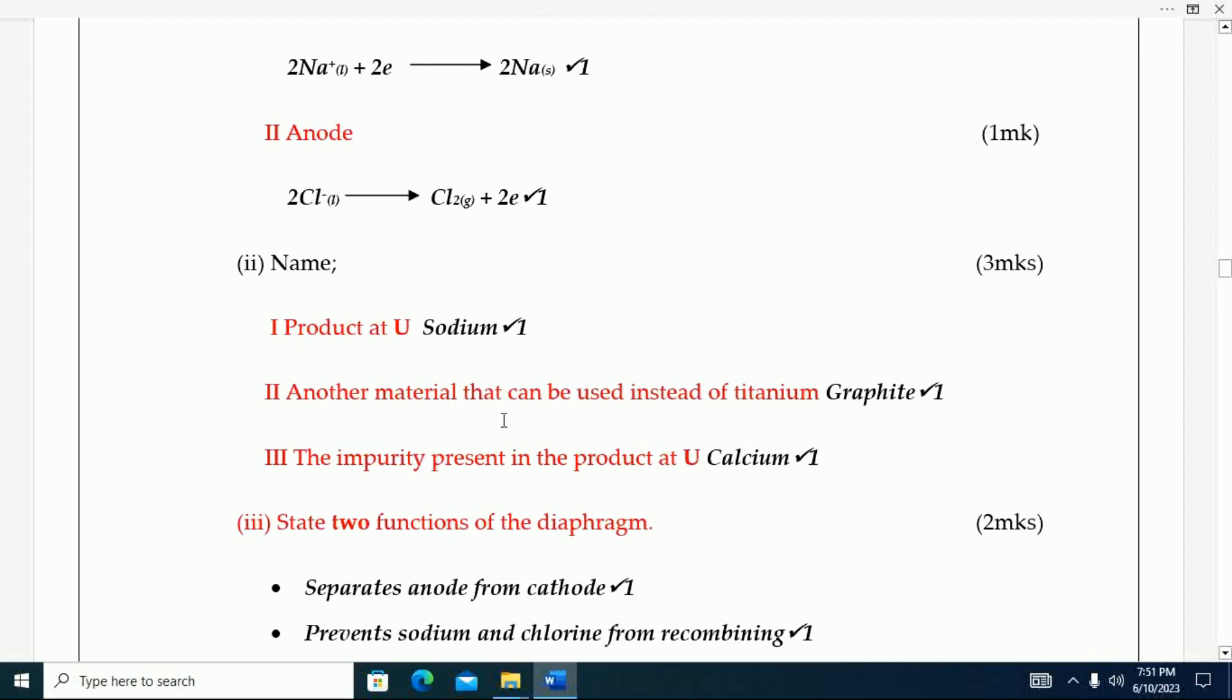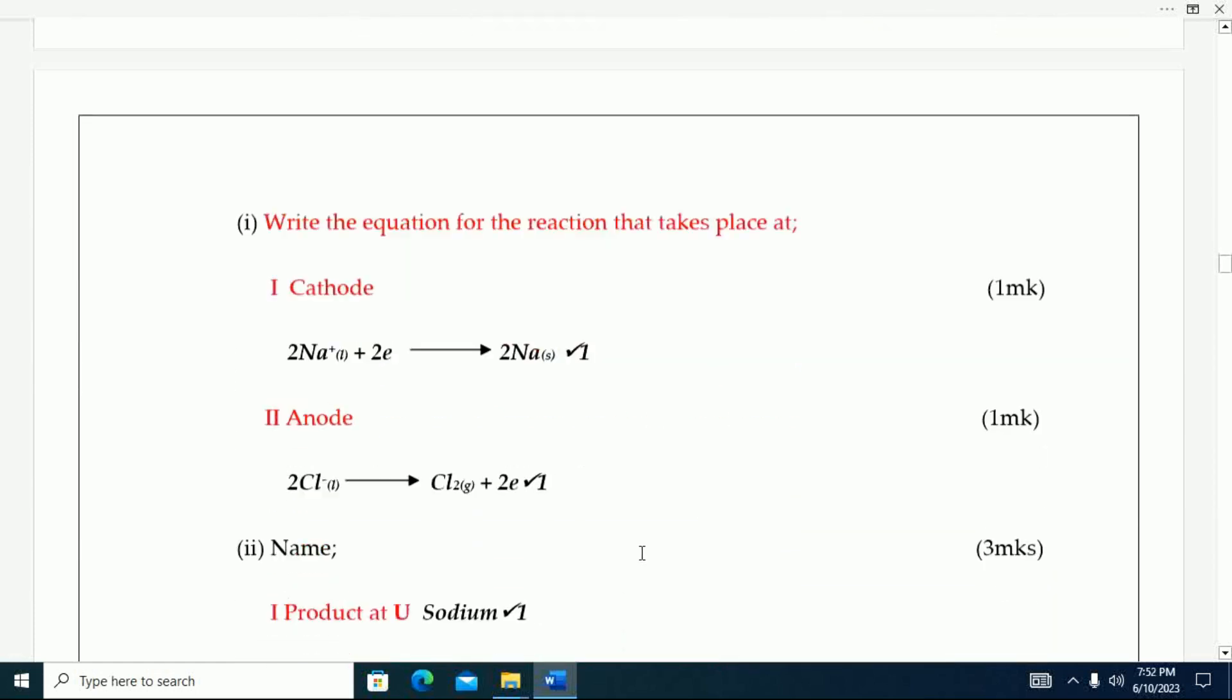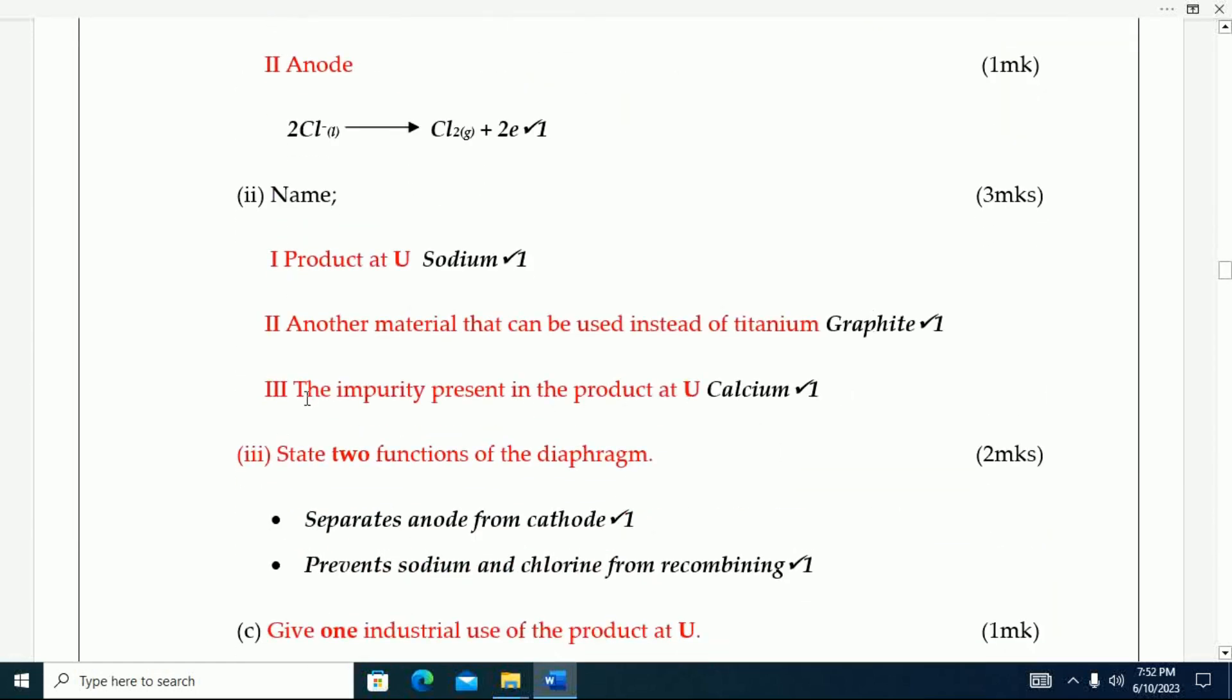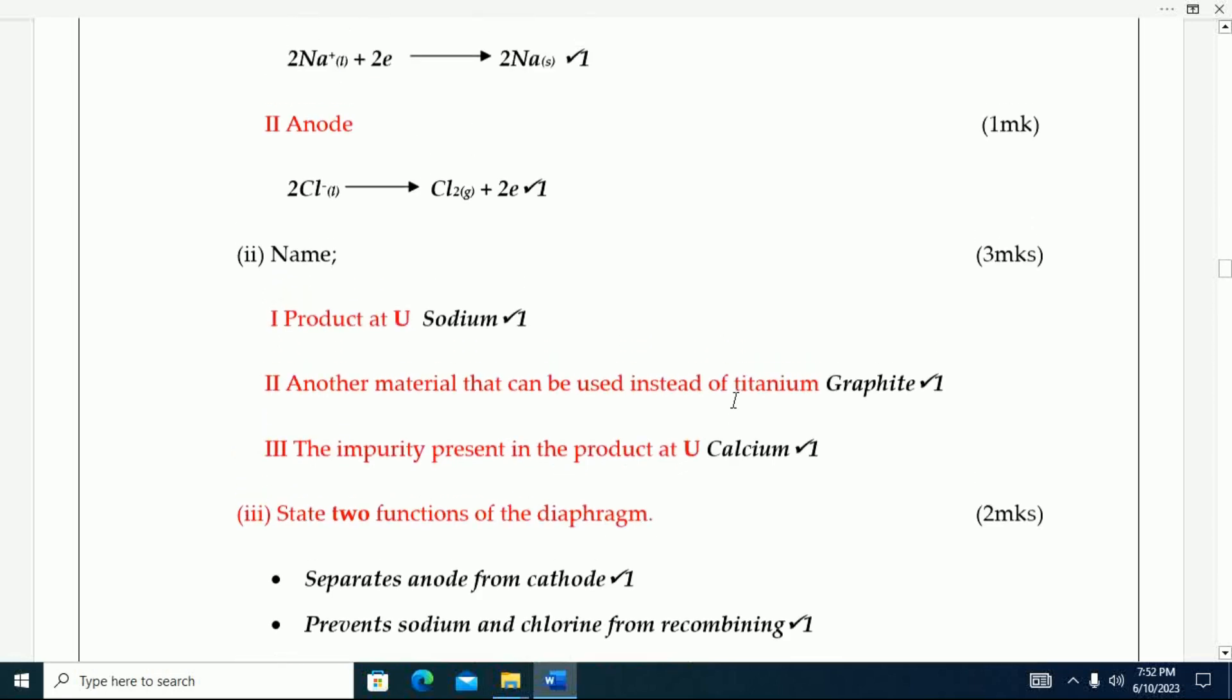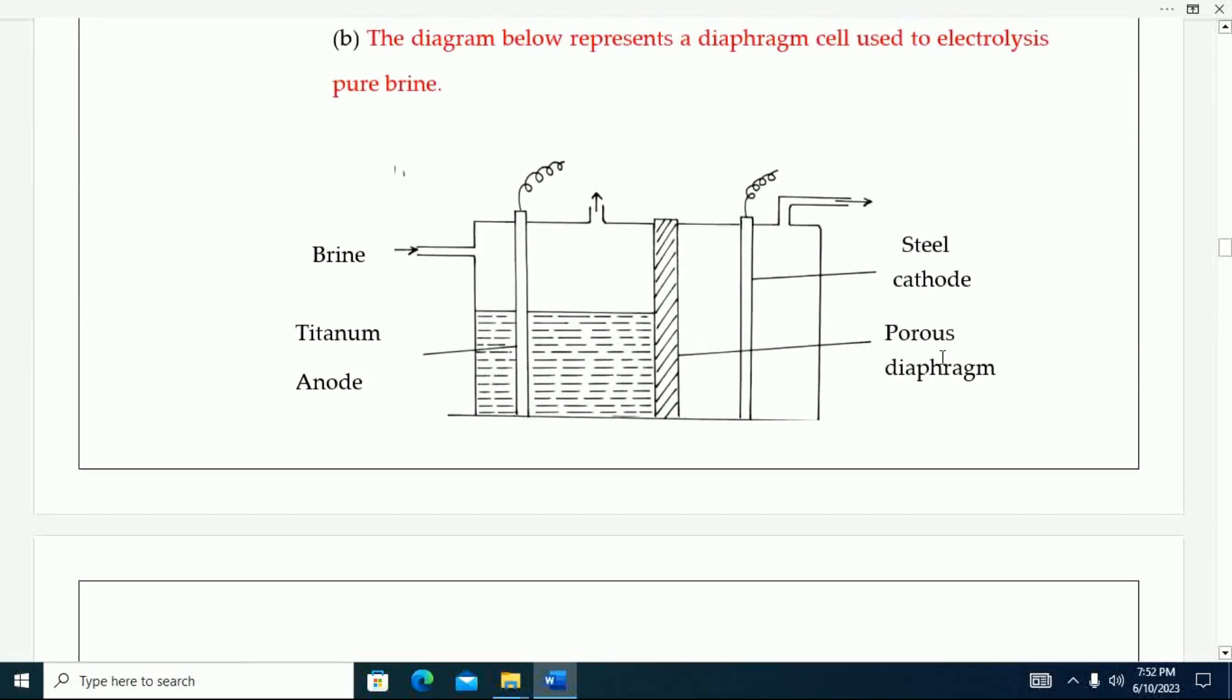Another material that can be used instead of titanium, that one is graphite. The impurity present in product U is calcium.